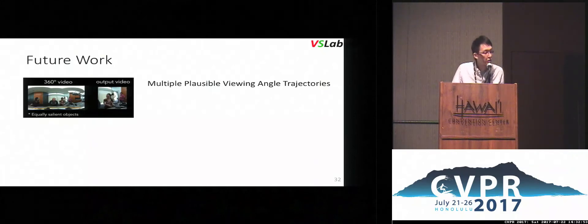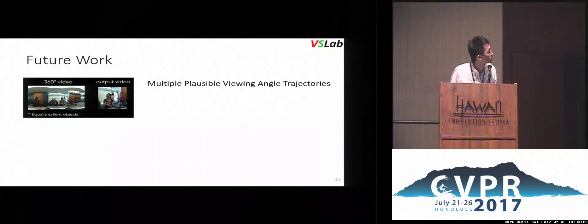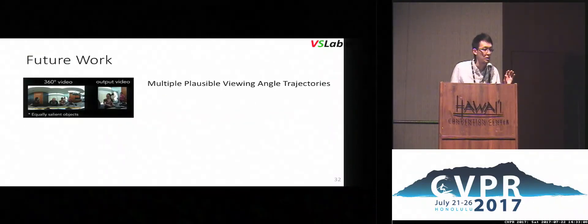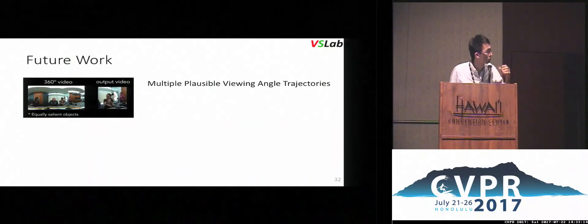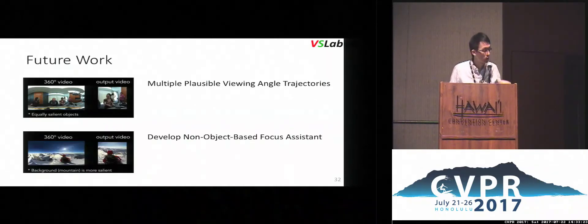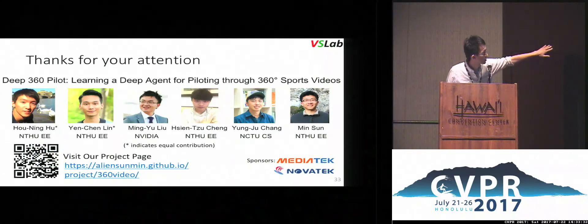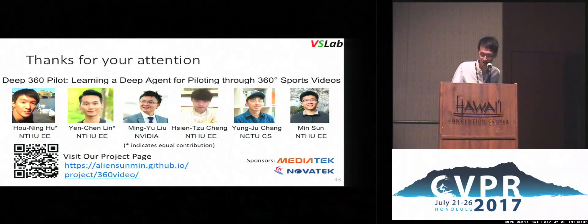In the future, we plan to address problems we are currently facing. Some 360 videos may have multiple valid viewing trajectories — different annotators may have different tastes leading to different trajectories — and we want to handle this problem and figure out how to evaluate our model in these situations. We also want to develop non-object-based detectors to address the background limitation. For more details, please visit our project page. Thanks for your attention.